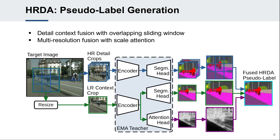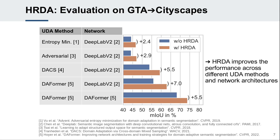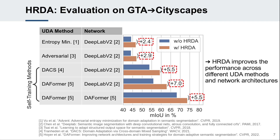The reassembled detail prediction is fused with the low-resolution context prediction using the scale attention, so that the better-suited resolution is used for object-scale-dependent adaptation. HRDA can be applied to various UDA methods and network architectures and consistently improves the performance by a significant margin. Especially self-training methods benefit from the high-quality multi-resolution pseudolabels, which reinforce the adaptation process.